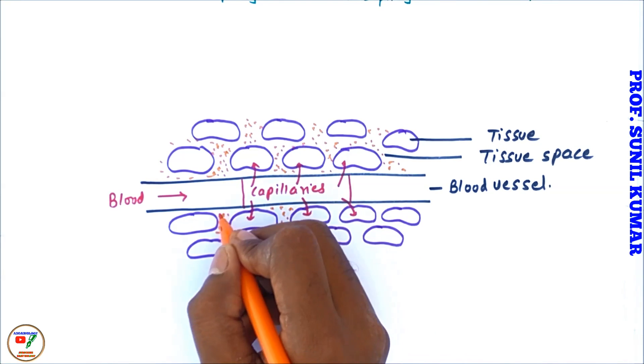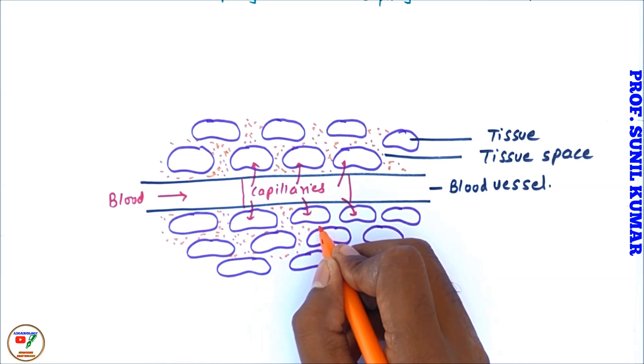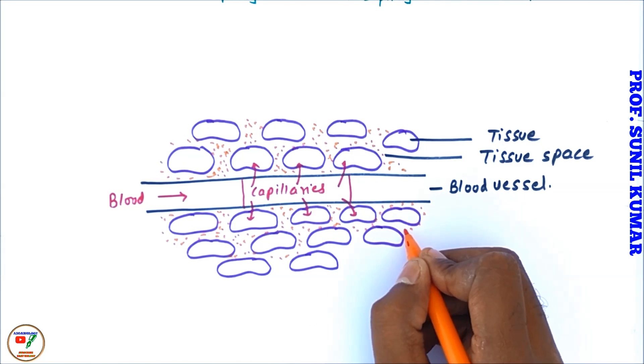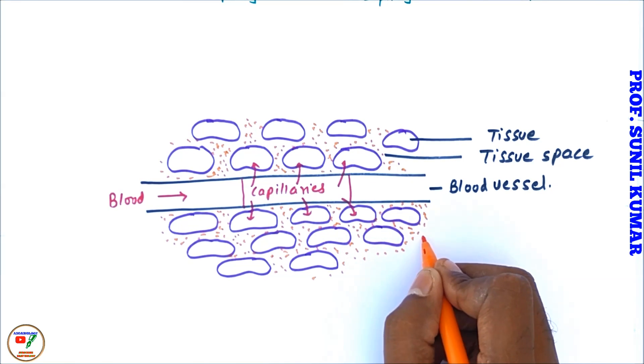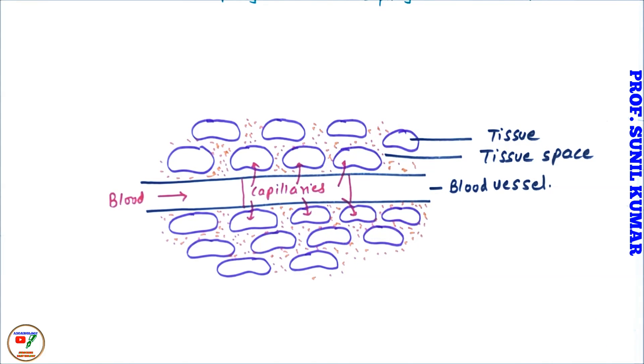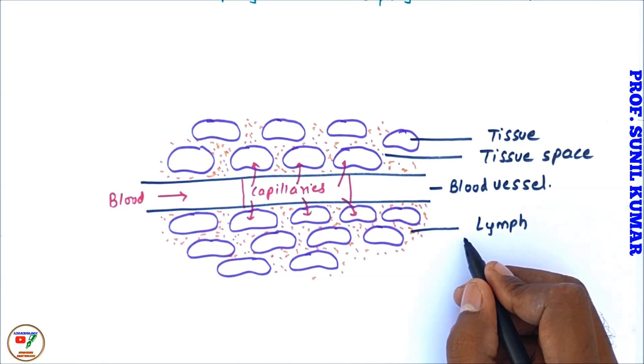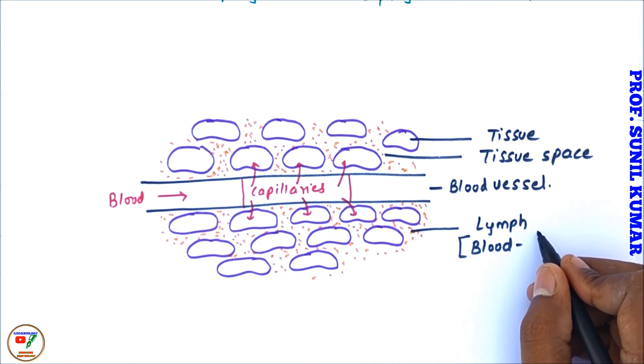What is that some part? It is nothing but blood minus RBC, platelets, and the plasma protein. All these three things are eliminated and some liquid oozes out in the tissue space and this liquid is called lymph.